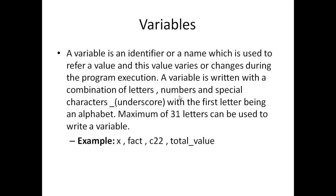Now these names must start with either underscore or alphabet. So the examples of probable or legal variables in C programming are x, fact, c22, total_value and so on.